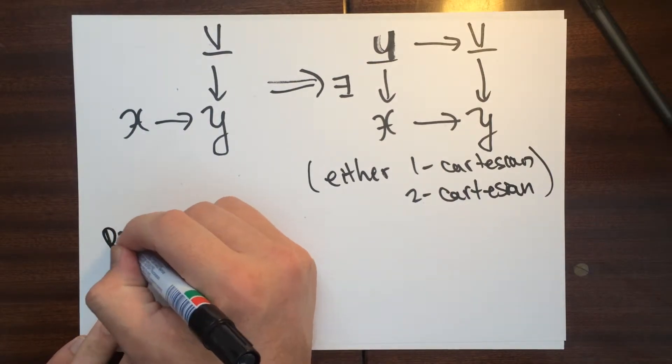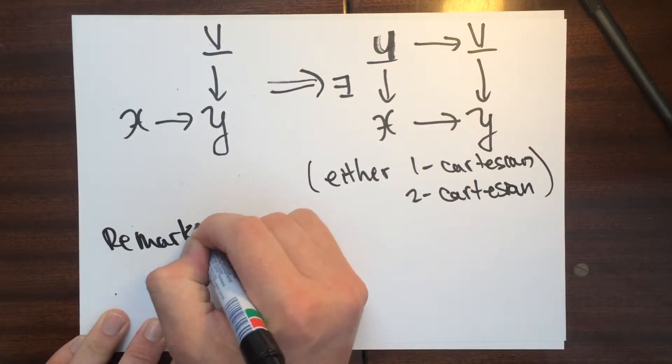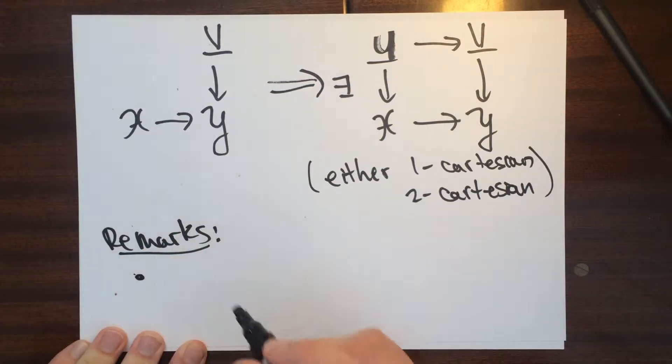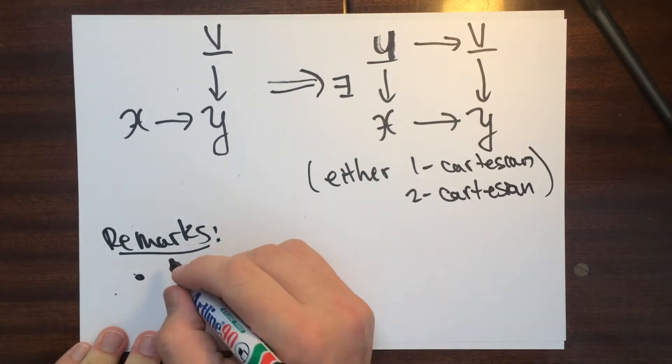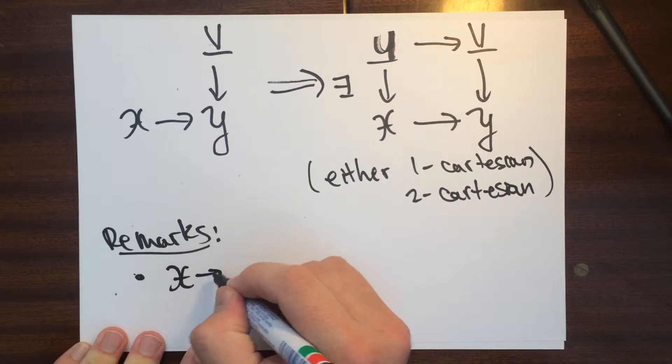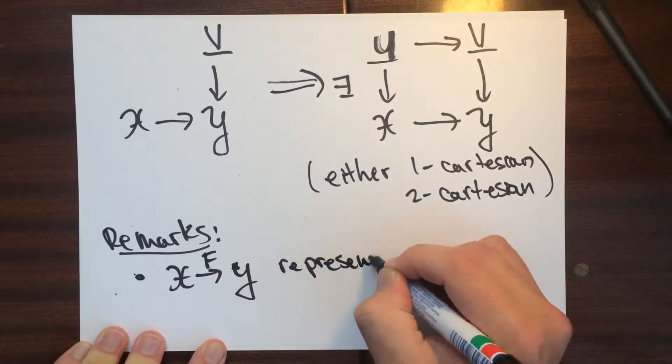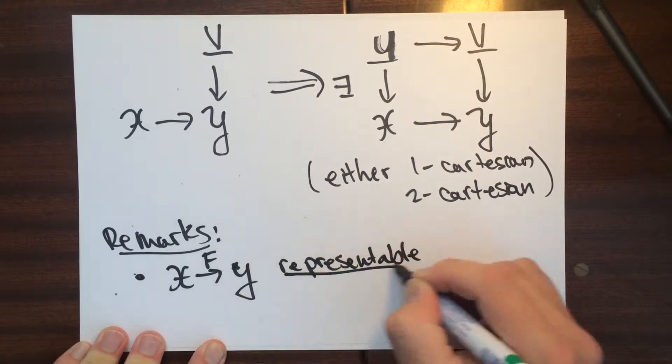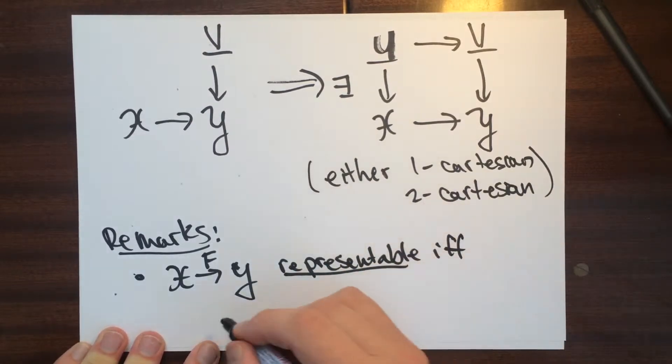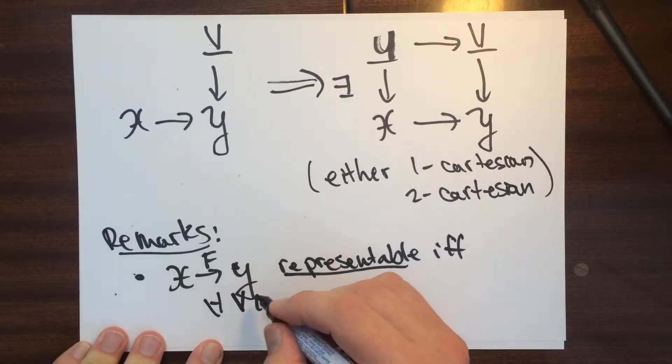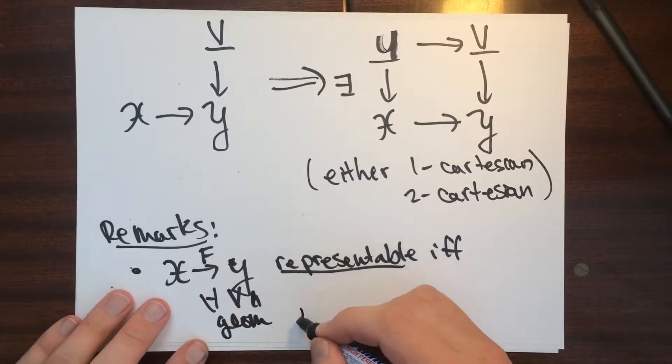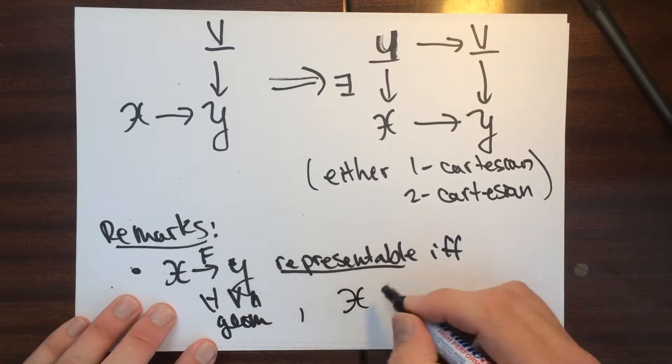So this guy here is representable now if and only if, so for all V in, let's say geometric—I'm going to say what, I'll say why I'm using the word geometric here, but in a moment, in the next remark, here...